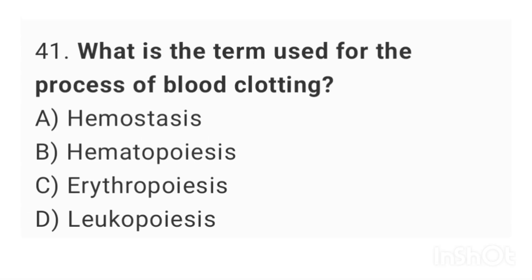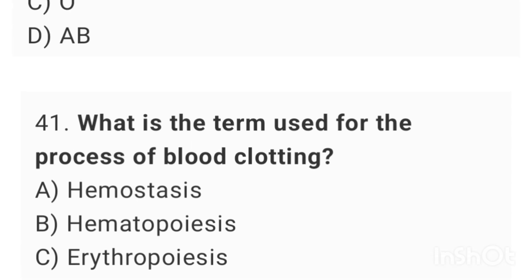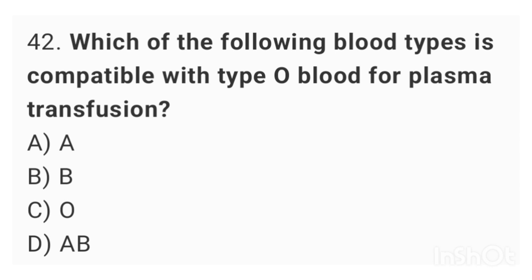Question number 41: What is the term used for the process of blood clotting? The right answer is option A: hemostasis. Question number 42: Which of the following blood types is compatible with type O blood for plasma transfusion? The right answer is option C: O.